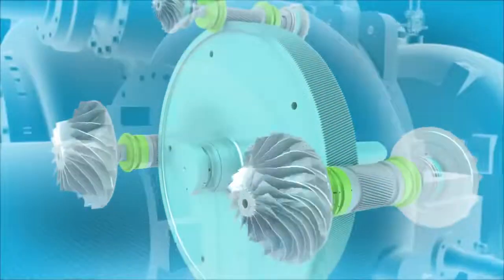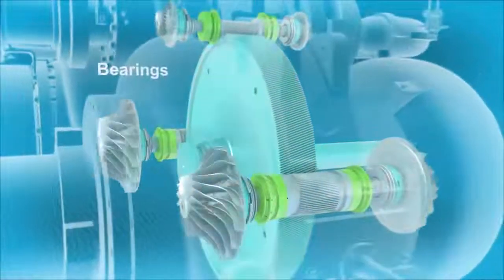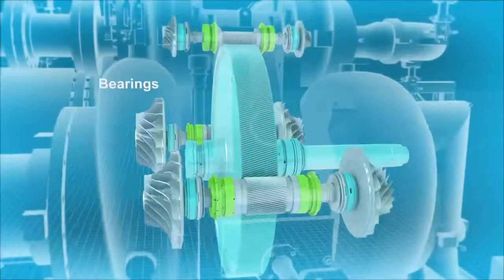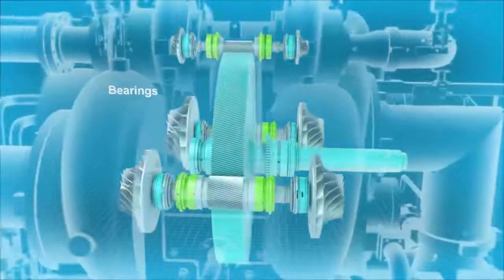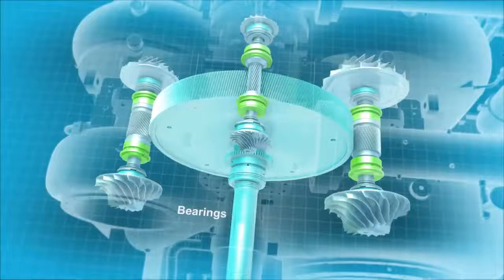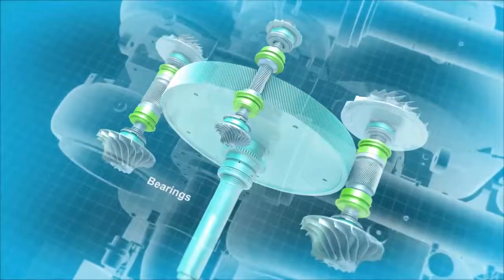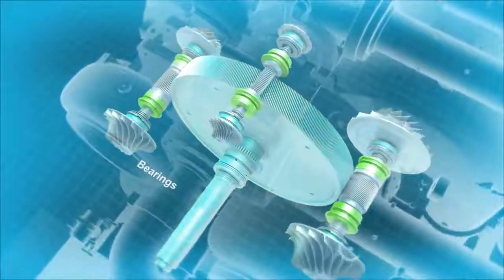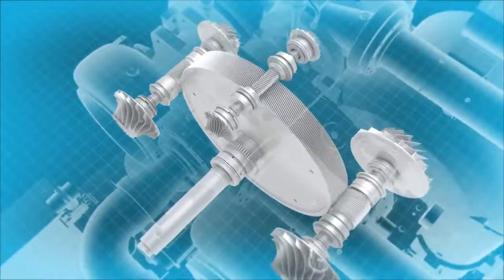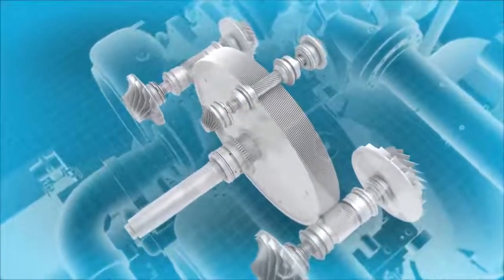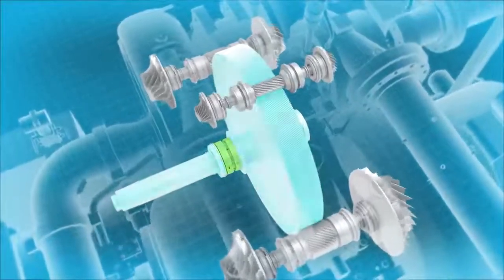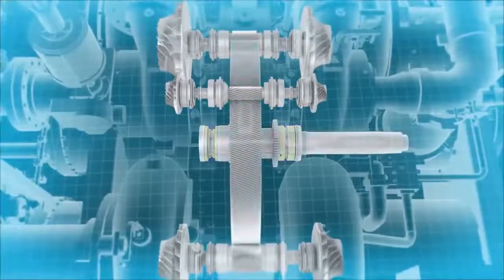High-speed rotors are supported by radial tilting pad bearings that eliminate virtually all vibration, while providing superior rotor stability and smooth rotation. Depending on the application, this can be a combination of radial and thrust bearings. The bull gear shaft rotates on multi-lobe sleeve bearings.